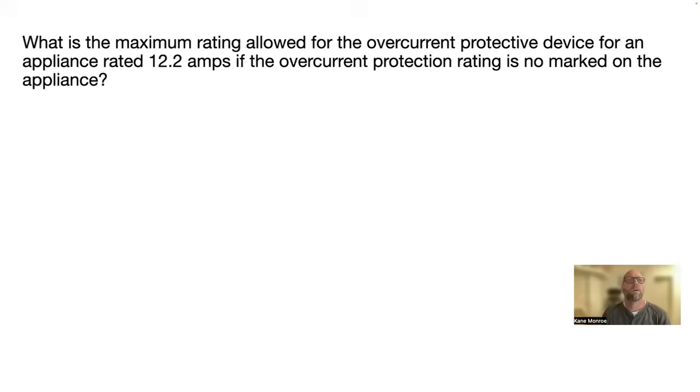Next one. What is the maximum rating allowed for overcurrent protective device for an appliance rated 12.2 amps if the overcurrent protection rating is not marked on the appliance? 20 amps. Maximum allowed overcurrent protection is 20 amps. That's in 422.11 C2. Make sure you guys are highlighting those.